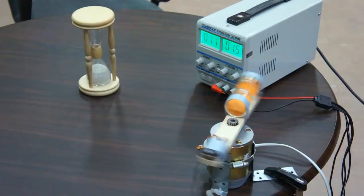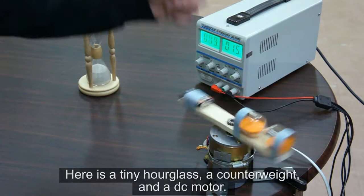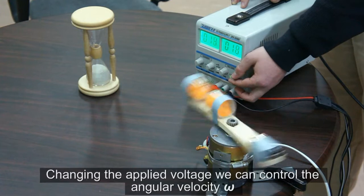Here is a tiny hourglass, a counterweight and a DC motor. Changing the applied voltage, we can control the angular velocity omega.